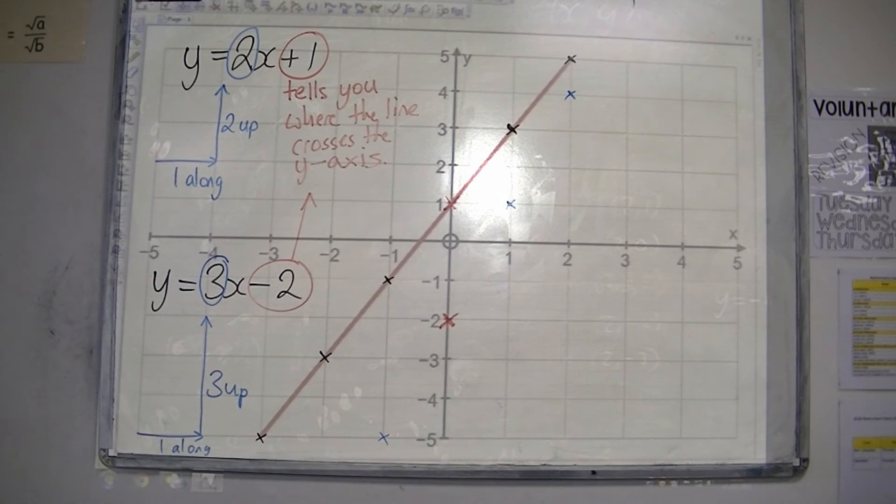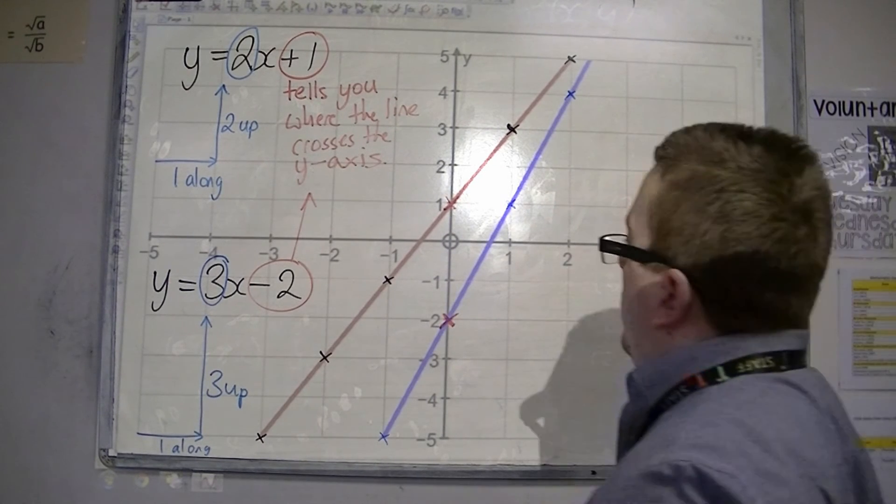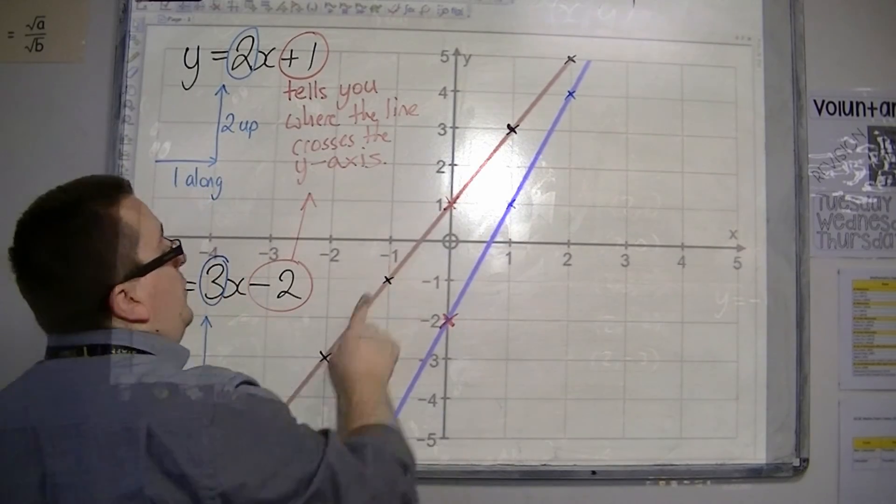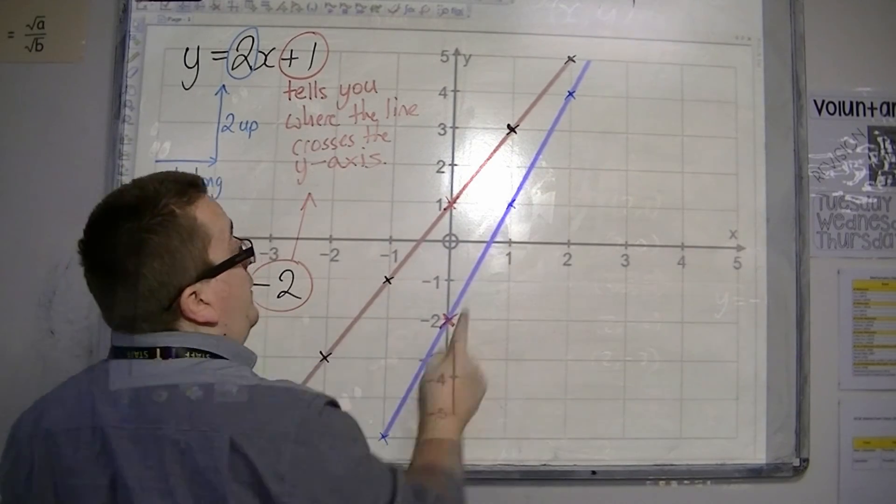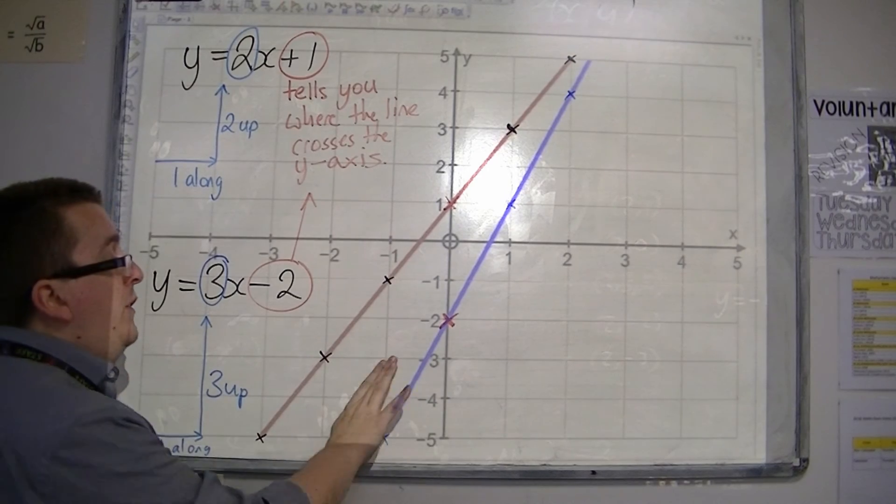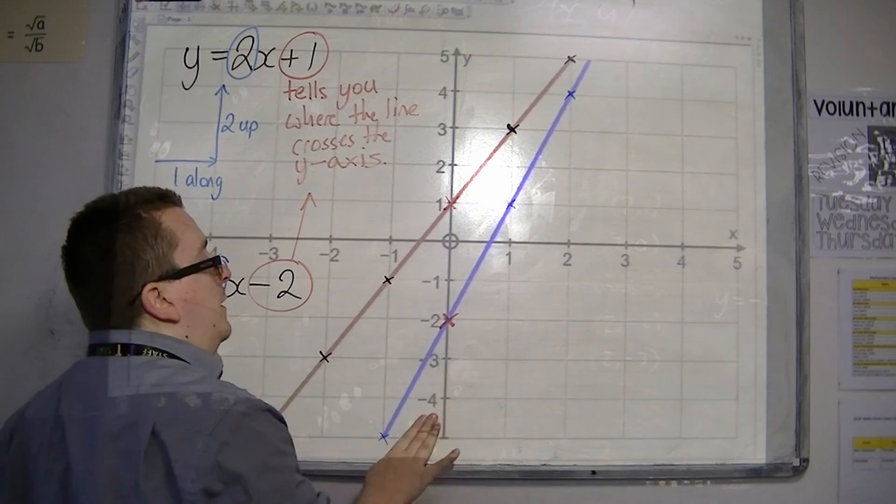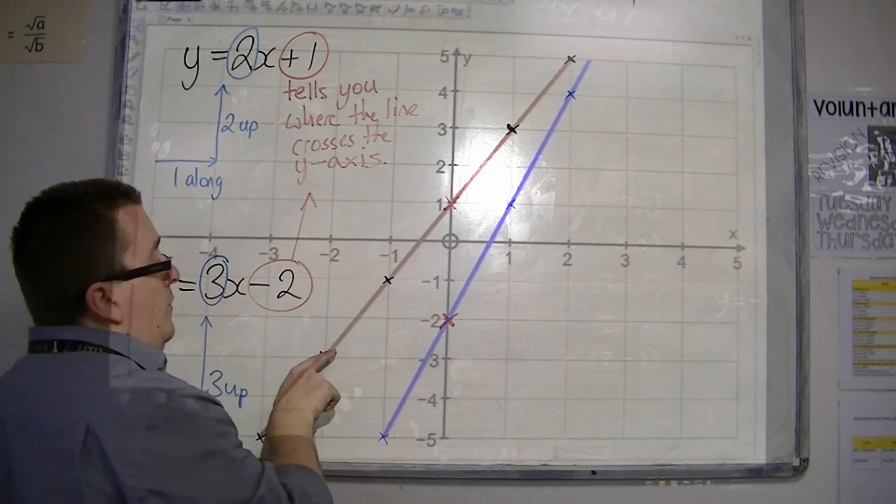So if I then plot it, y equals 3x minus 2, there is my line. So you can see that for this line the gradient was 2. For this line the gradient is 3, and you should be able to see that this line is steeper, steeper than the red one.